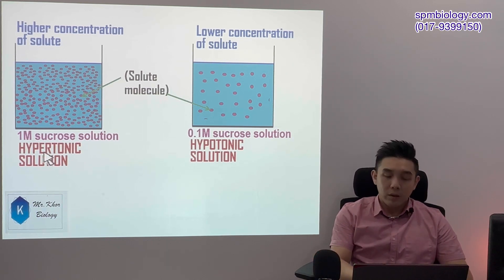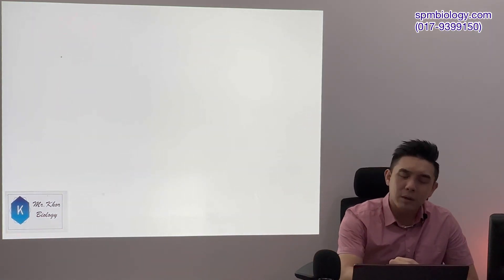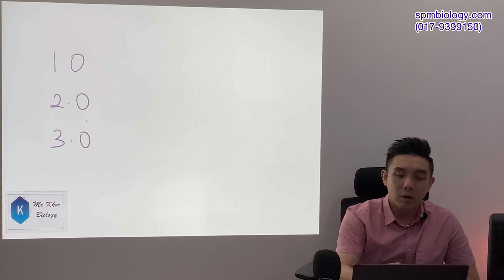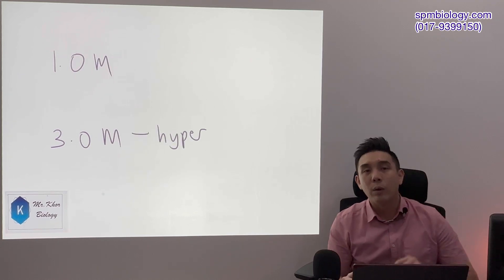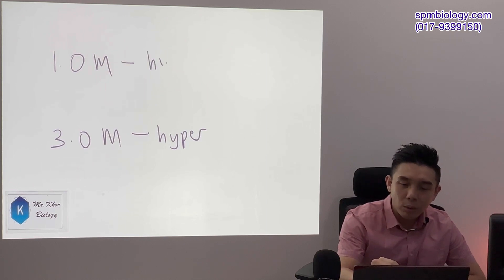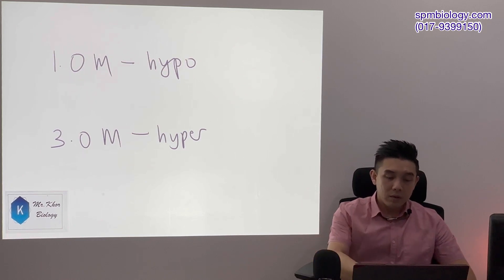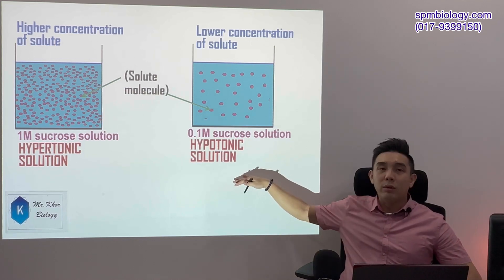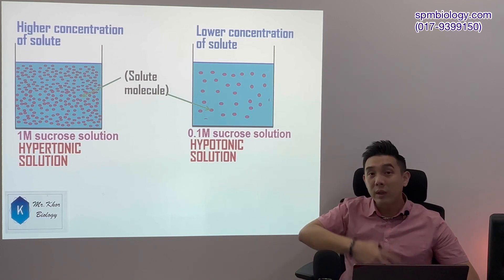For example, comparing 0.1 mole and 1 mole, 1 is obviously bigger, so that is the hypertonic solution. If I show you 1, 2, and 3 mole solutions, the 3 mole is hypertonic and the 1 mole is automatically hypotonic. So step one: determine which is hyper and which is hypo. Step two: water always moves from hypotonic to hypertonic.